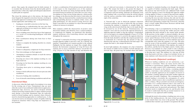A sideslip is entered by lowering a wing and applying just enough opposite rudder to prevent a turn. In a sideslip, the airplane's longitudinal axis remains parallel to the original flight path, but the airplane no longer flies straight ahead. Instead, the horizontal component of wing lift forces the airplane to move somewhat sideways toward the low wing. The amount of slip and the rate of sideward movement is determined by the bank angle — the steeper the bank, the greater the degree of slip. As bank angle is increased, additional opposite rudder is required to prevent turning. Sideslips are frequently used when landing with a crosswind to keep the aircraft aligned with the runway centerline while stopping any drift.